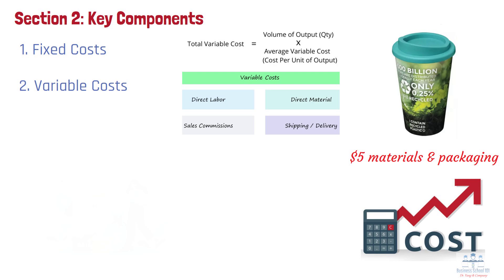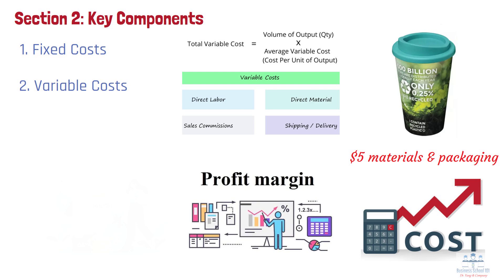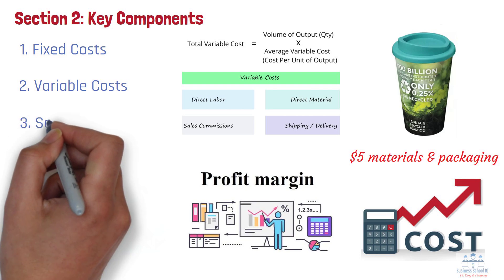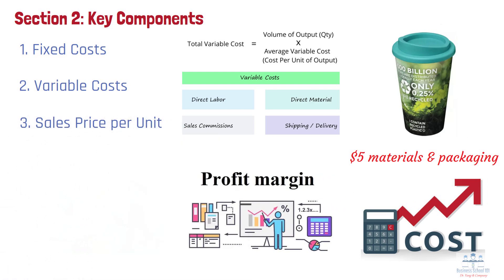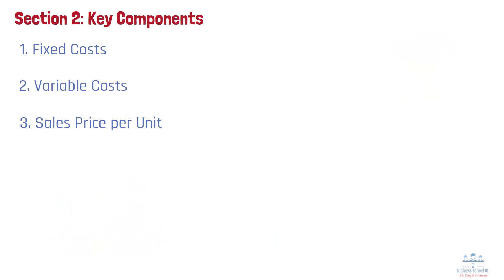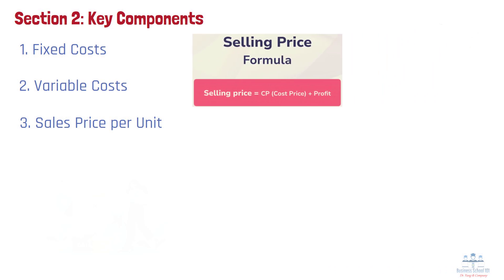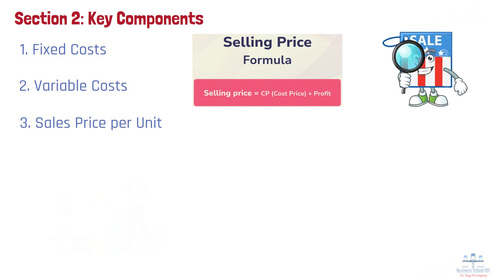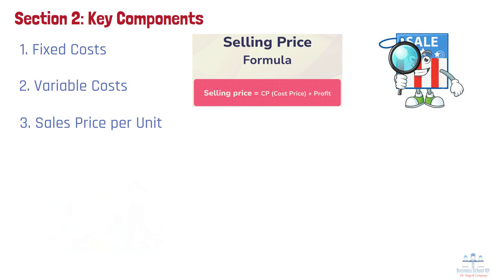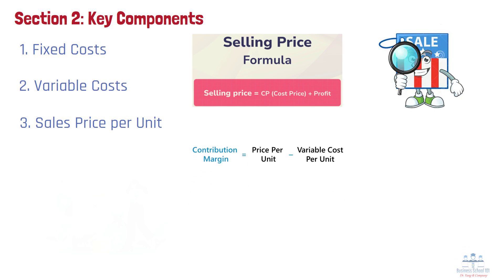Variable costs are important because they directly impact the margin between revenue and expenses for each unit sold. Number 3: Sales price per unit. The sales price per unit is the amount a company charges customers for one unit of its product or service. This figure represents the revenue the company earns from each unit sold before deducting any costs. In break-even analysis, the sales price per unit is compared to the variable cost to determine the contribution margin, the portion of each sale that contributes to covering fixed costs.